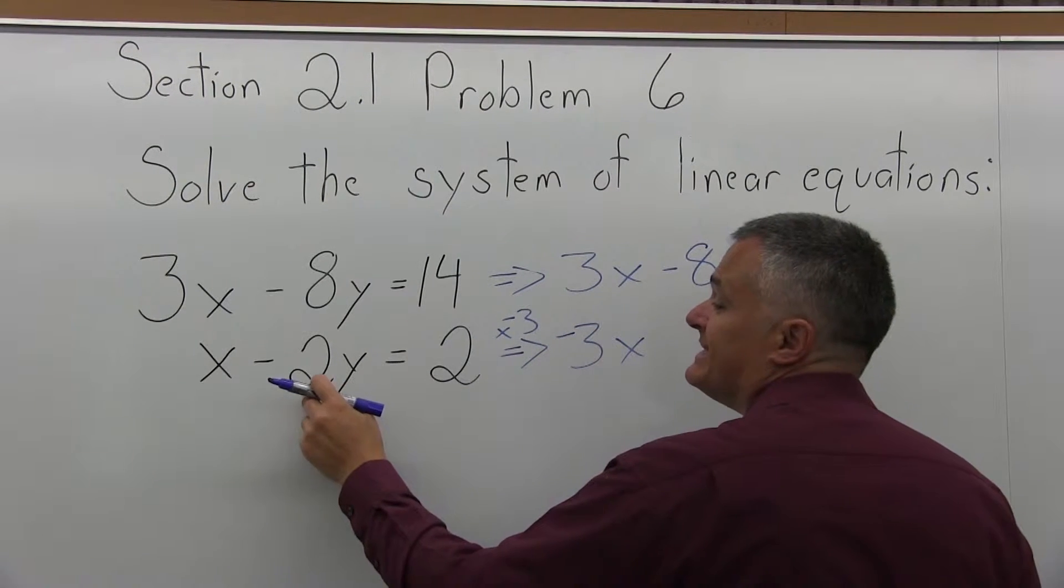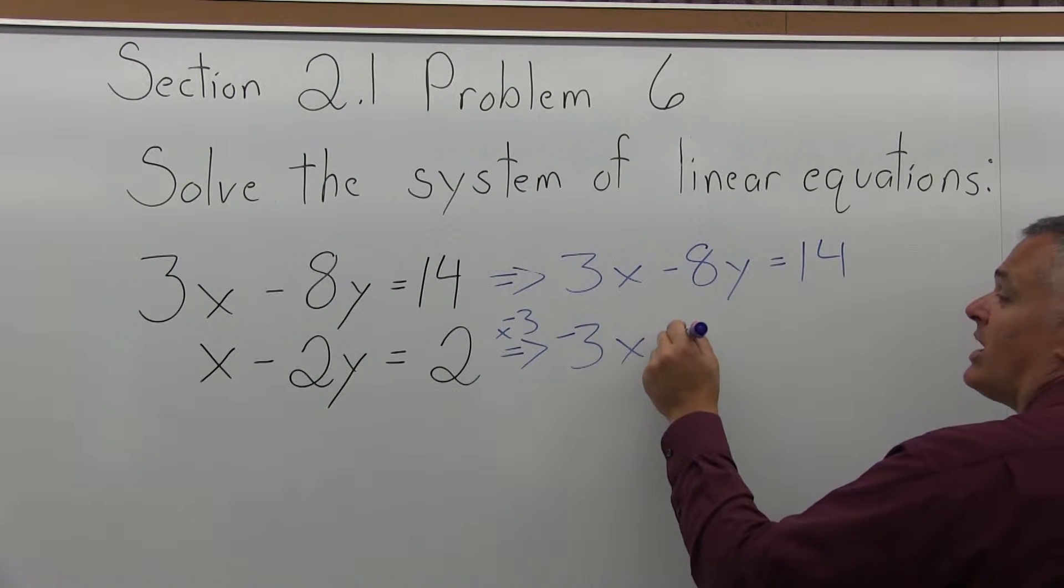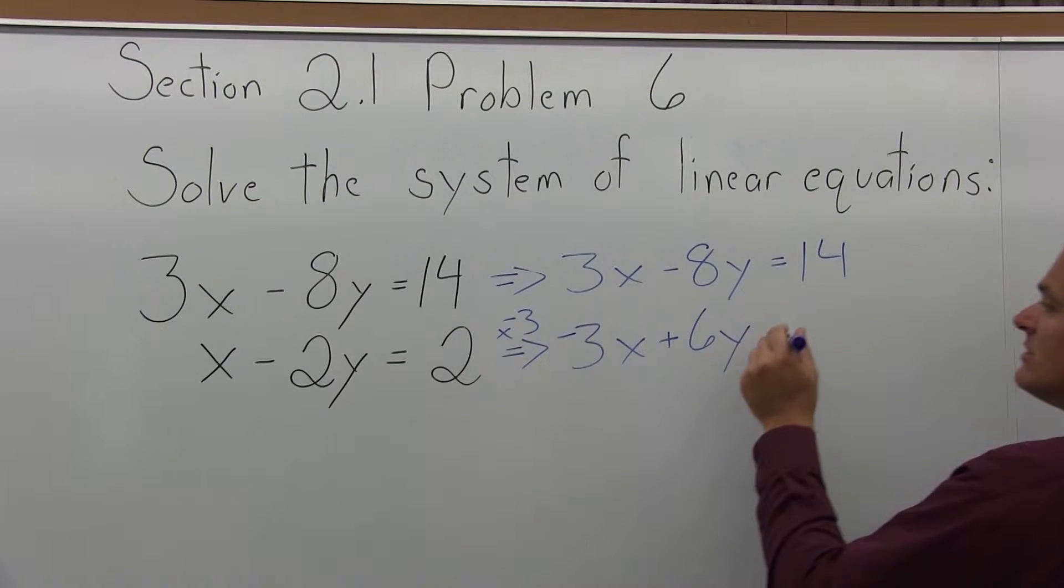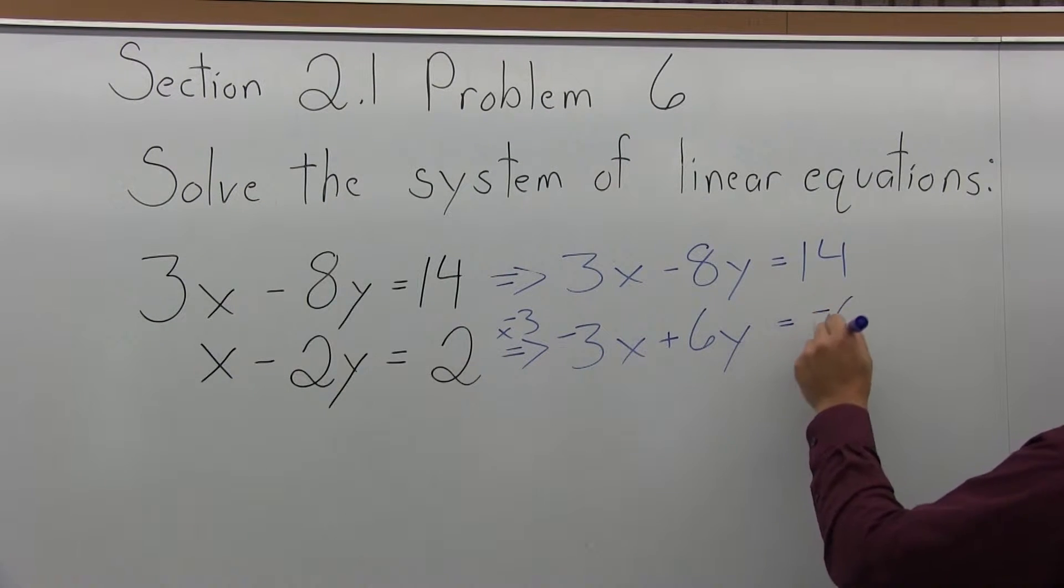Negative 3 times negative 2y is positive 6y. And then, negative 3 times 2 is negative 6.